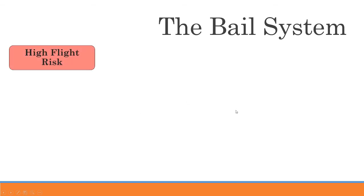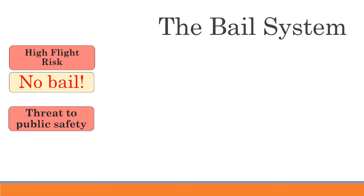If you're deemed to be a high flight risk, then there's just no bail — no amount of money will allow the court to think you're going to come back. This also happens if you're determined to be a threat to public safety. This condition arose with the mob — sometimes mafiosos would get bail and then literally kill every single witness. Even though they posed no flight risk and were released, they would intimidate or kill potential witnesses.